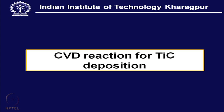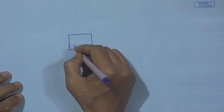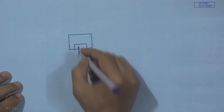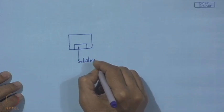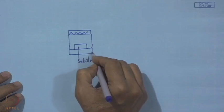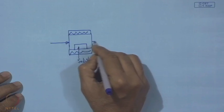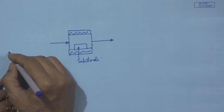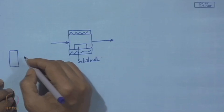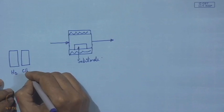Now, the CVD reaction for TiC deposition. If we consider a CVD reactor schematically and place the substrate inside, this is a hot wall reactor. It has one incoming line — the upstream — and the downstream side. On the upstream side, schematically, we need at least two sources: one is hydrogen and another is methane.